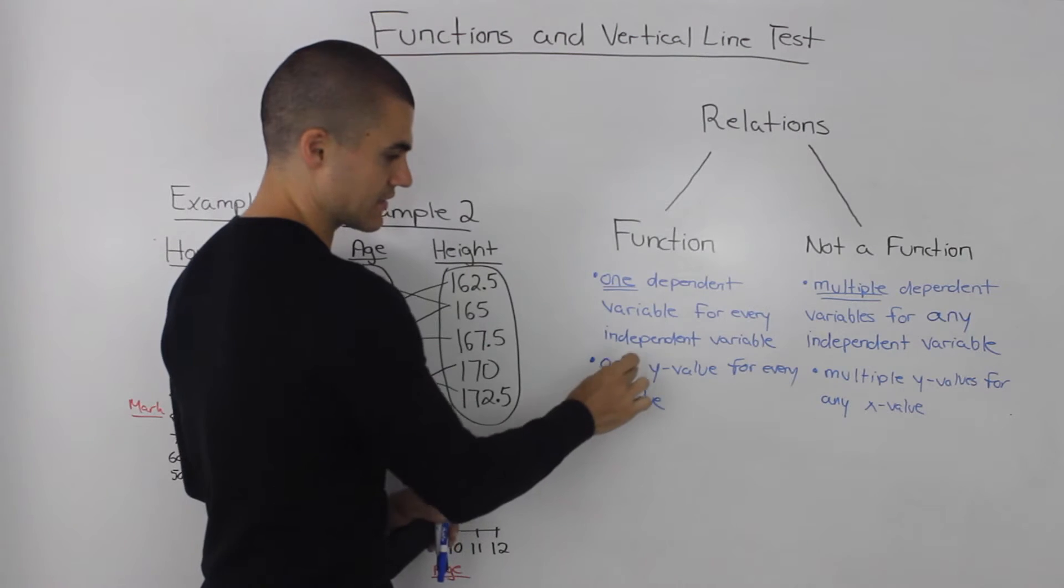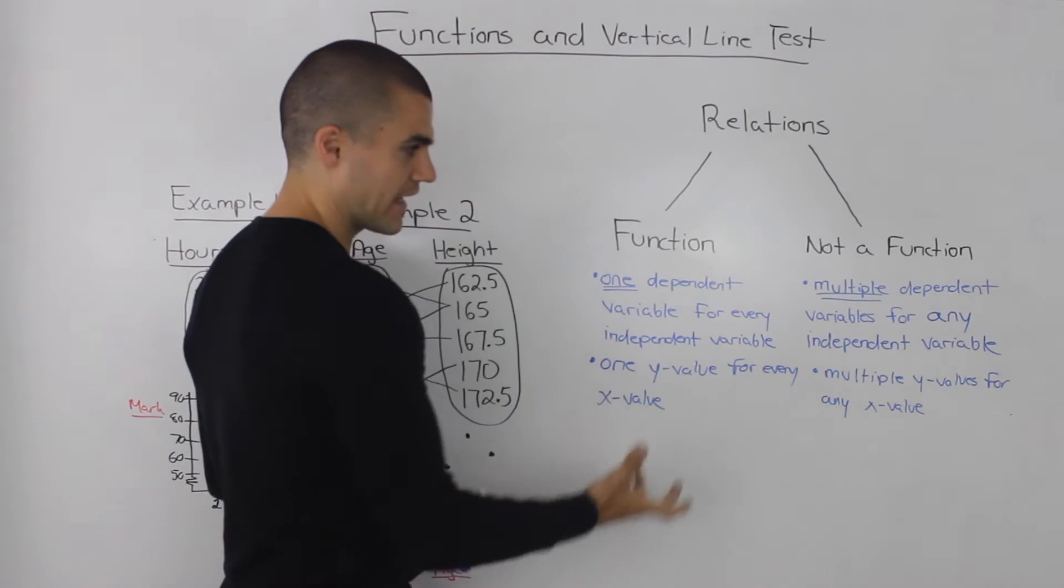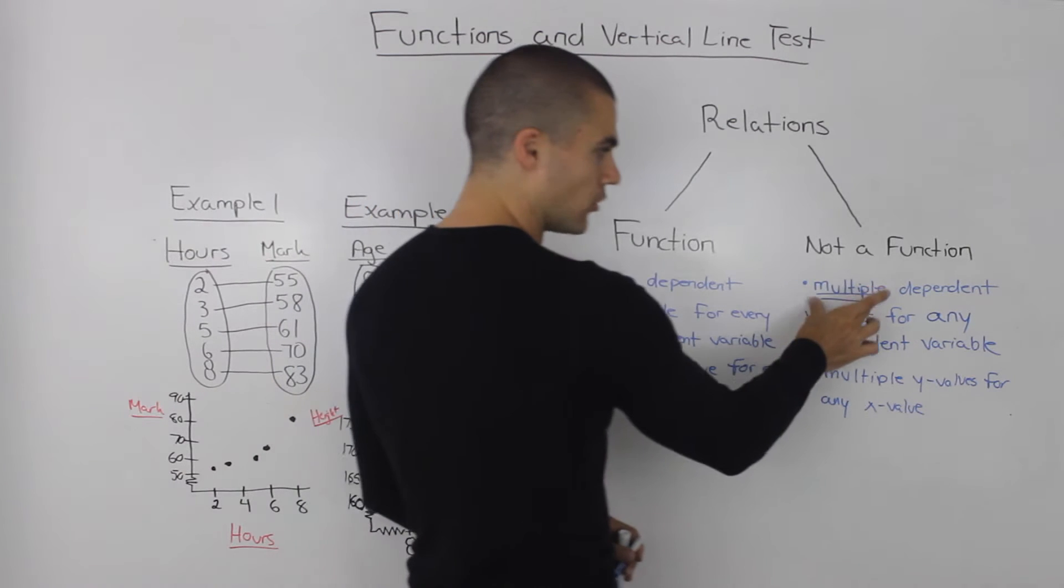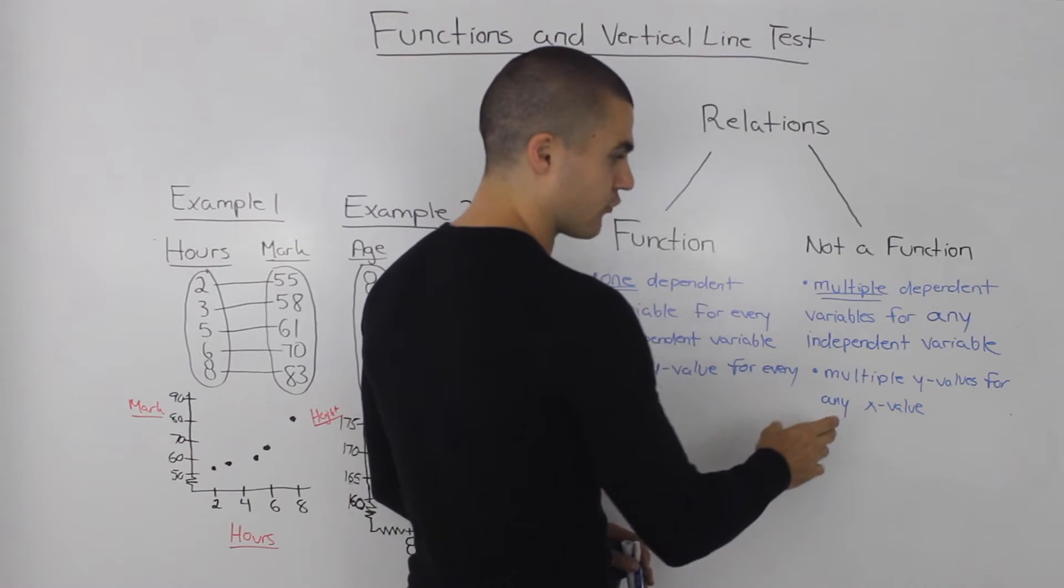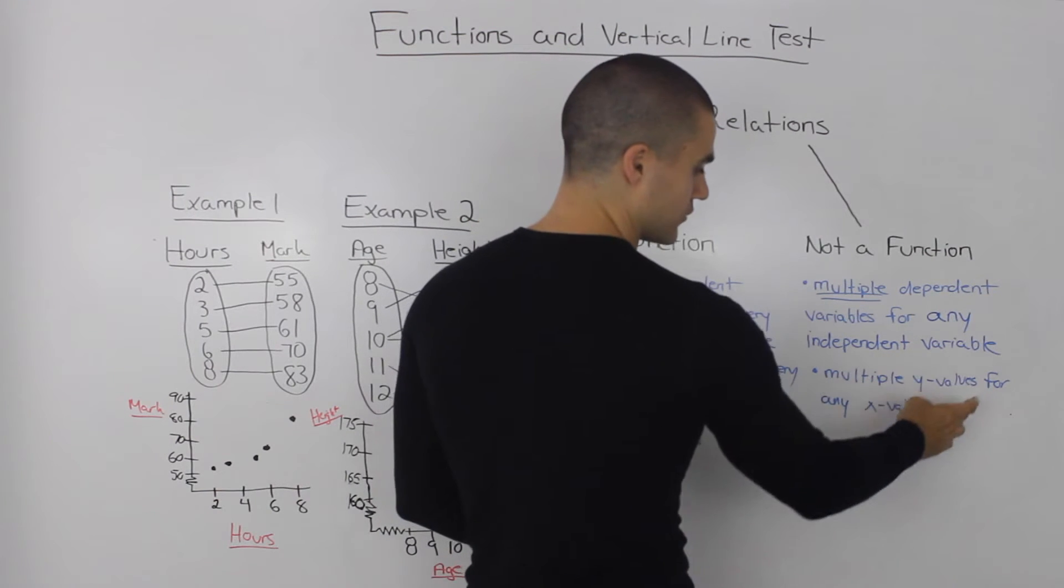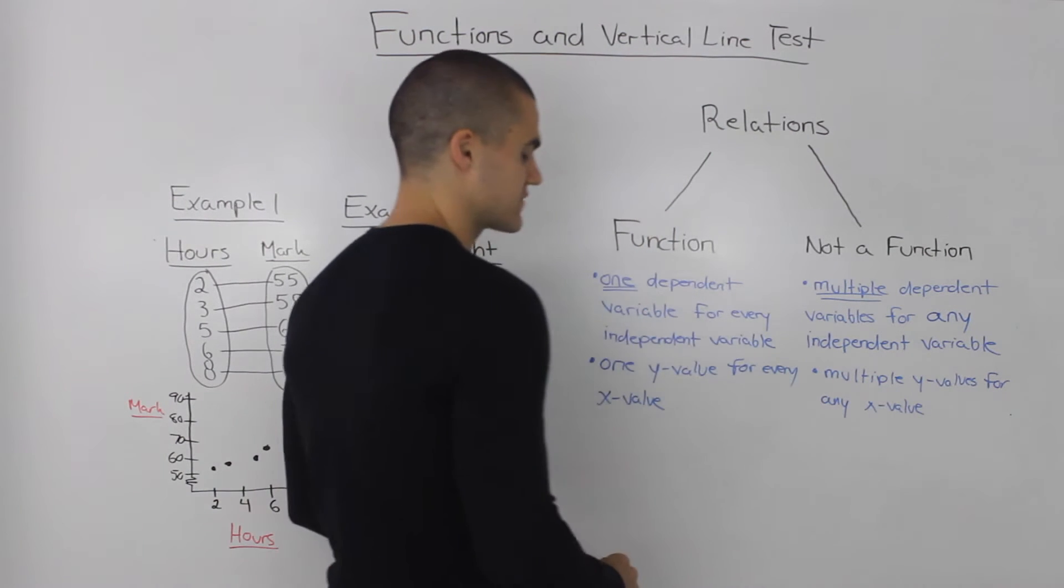Well a function basically means that there is one dependent variable in the relation for every independent variable. A more simple way to say this is that there is one y value for every x value. And a non-function has multiple dependent variables for any independent variable, or multiple y values for any of the x values.